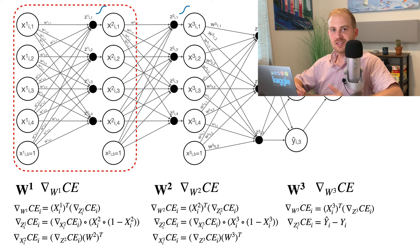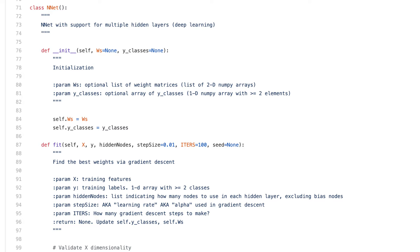To get you started, I modified the InNet class to use a Ws attribute, which is an ordered list of all the weight matrices. And in the fit method, the hidden nodes parameters should now be a list of integers indicating how many nodes to use in each hidden layer.